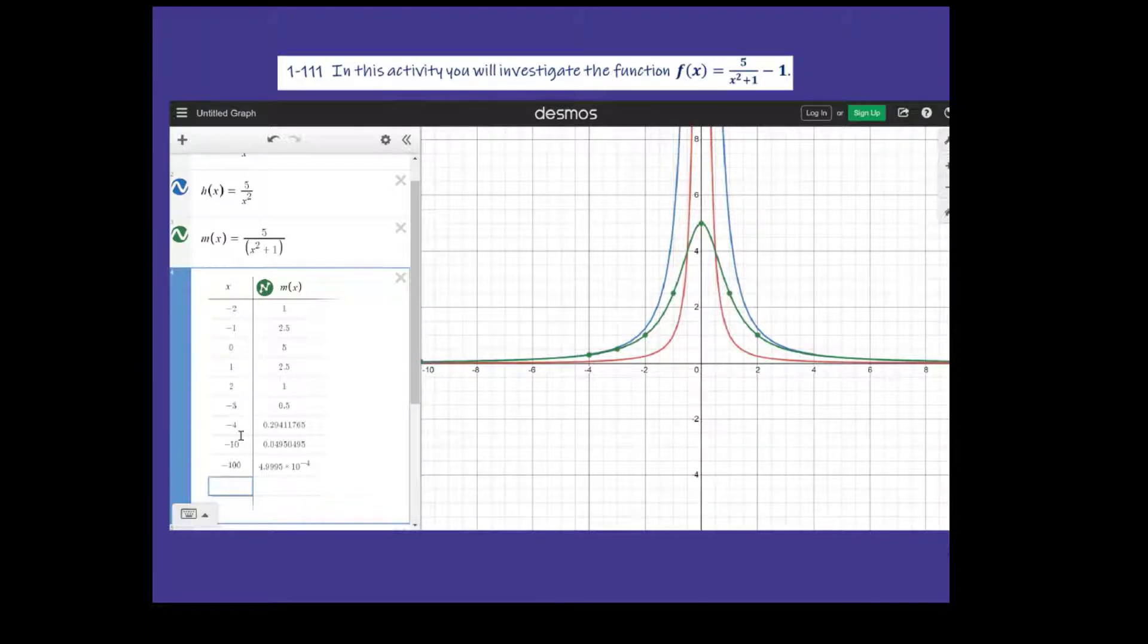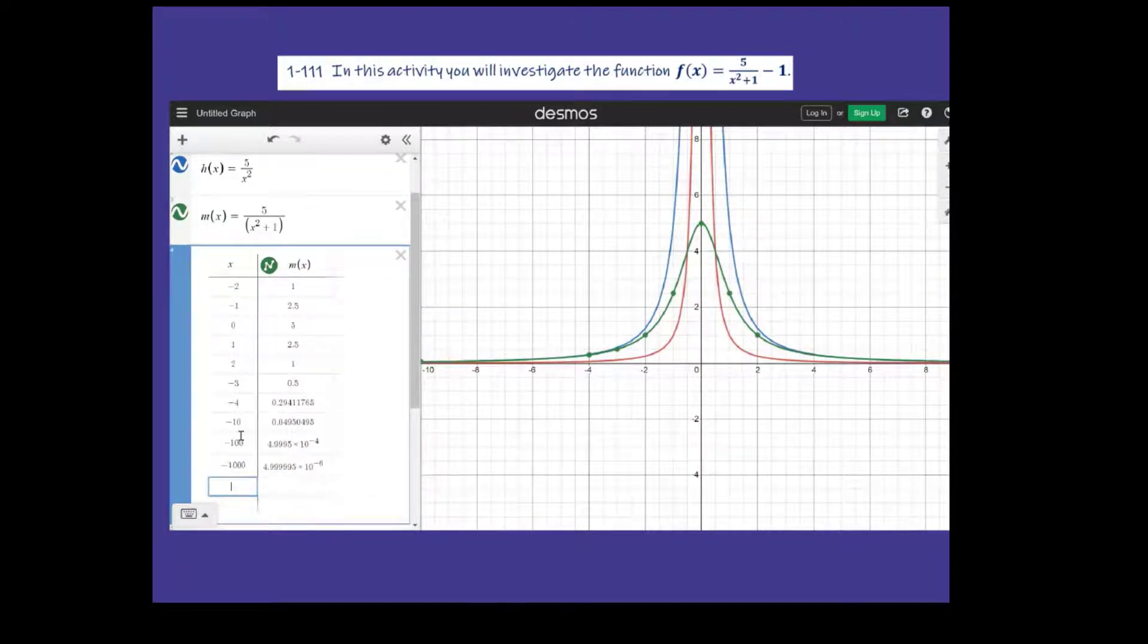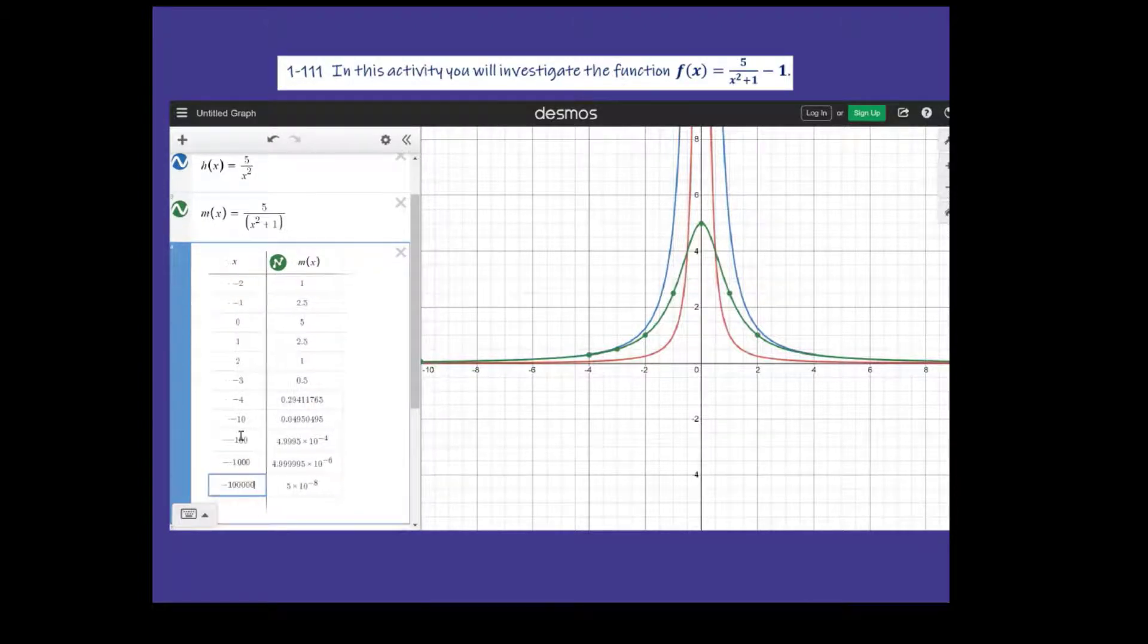And then let's see here, negative 1,000. Look at that. So it doesn't really matter. Sometimes it shows up as 1 just because the calculator itself doesn't like to round it. So you can see that there is an asymptote there because it's never actually going to hit 0.